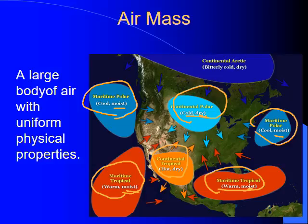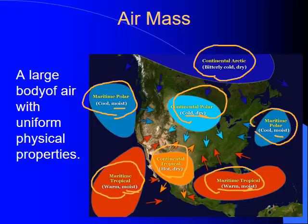The last type of air mass is an Arctic air mass. The Arctic air masses are what we get with that polar vortex they talk about in the winter when it's really super cold — less than freezing, less than zero Celsius or 32 Fahrenheit. That's when we're getting air from the North Pole, the continental Arctic air.